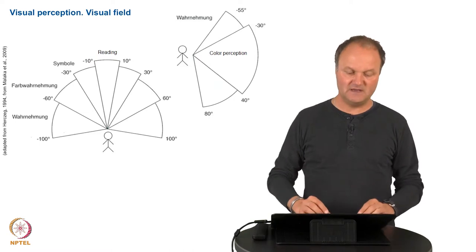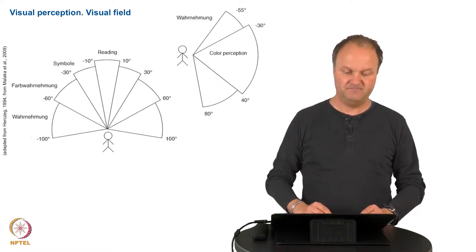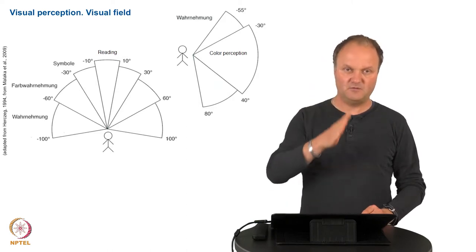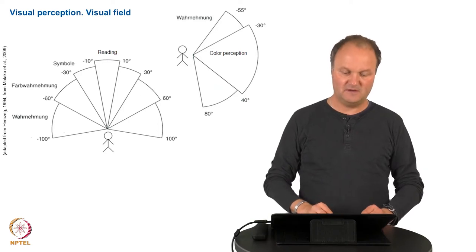For example, someone is approaching us, but we cannot see that sharply. And the same, by the way, happens also in the median plane, that is the plane transversing our head vertically.